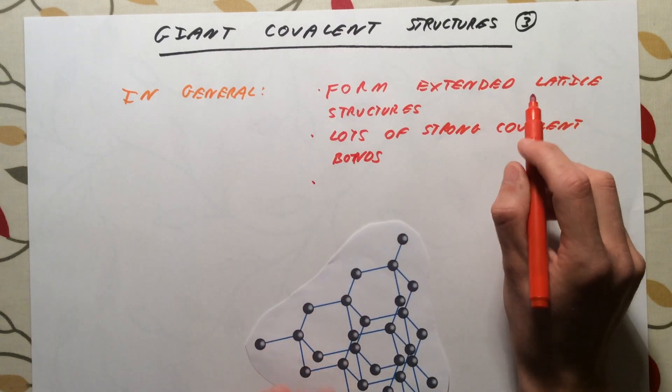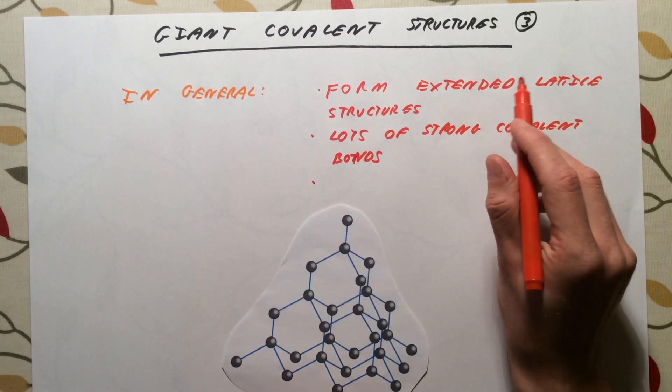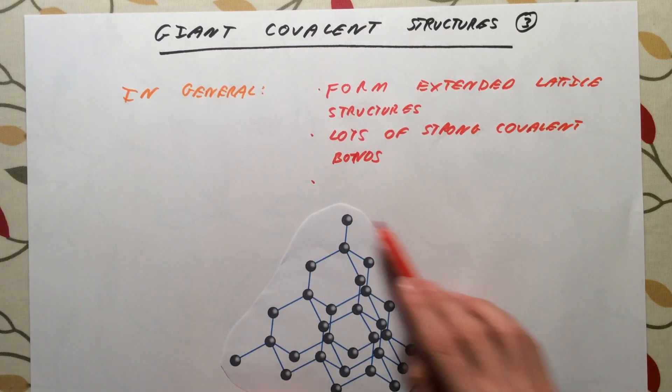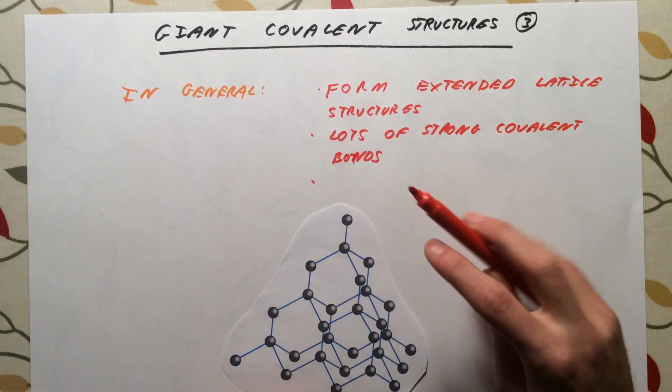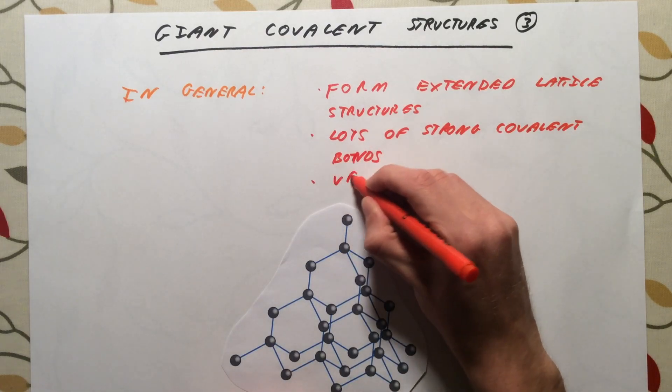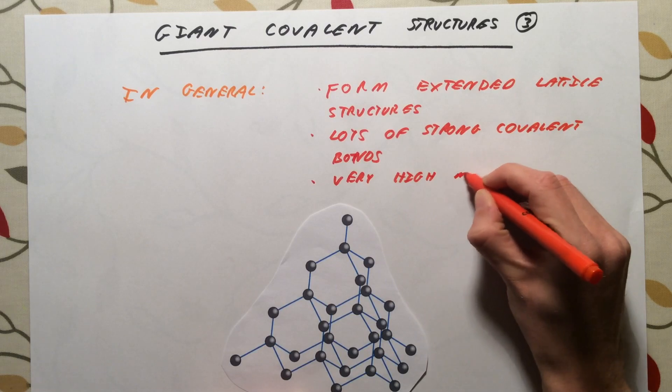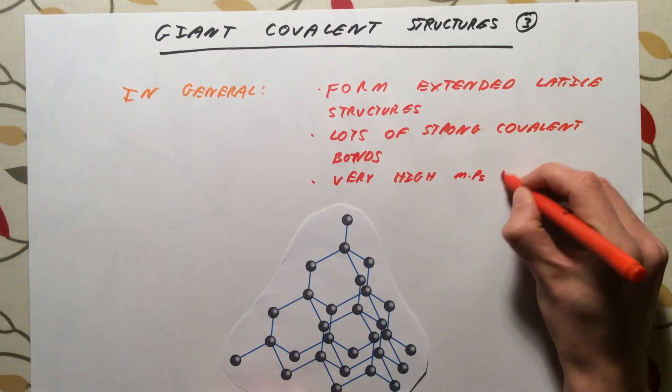In order to melt or to boil one of these substances, we actually have to break every single one of these covalent bonds, because we don't have separate molecules. We actually have to break these strong bonds now. Therefore they have very high melting points and boiling points.